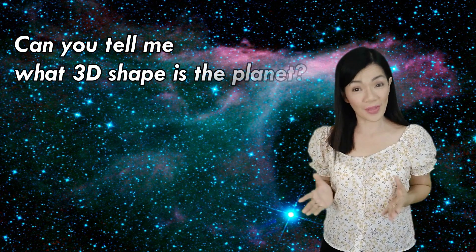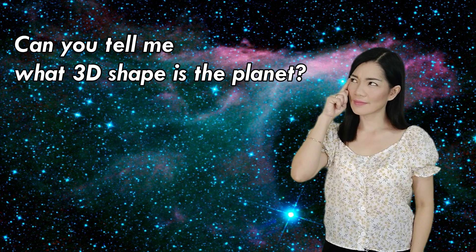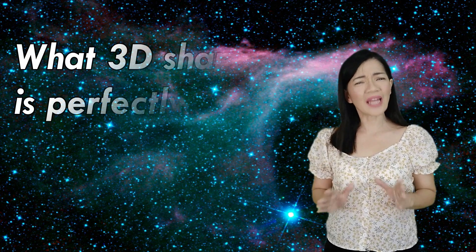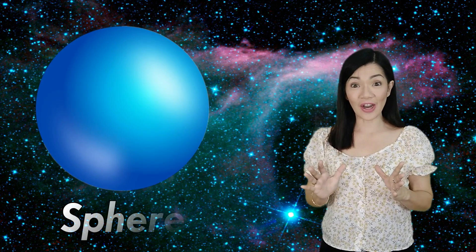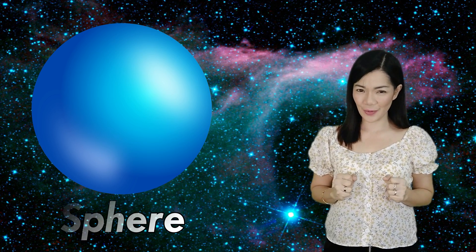Can you tell me what 3D shape is the planet? Let's think about it. What 3D shape is a planet? We know that a planet is round, right? So what 3D shape is perfectly round? Yeah! A sphere! Planets are spheres that are perfectly round.